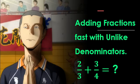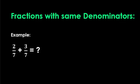Now, we're talking about adding fractions fast with unlike denominators. Before we handle different denominators, let's start with the easy case. When fractions already have the same denominator, you simply add the numerators. For example,